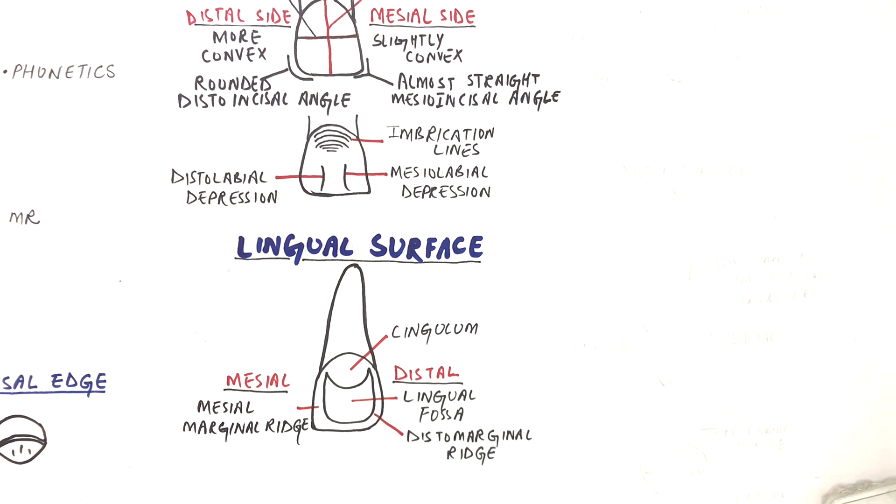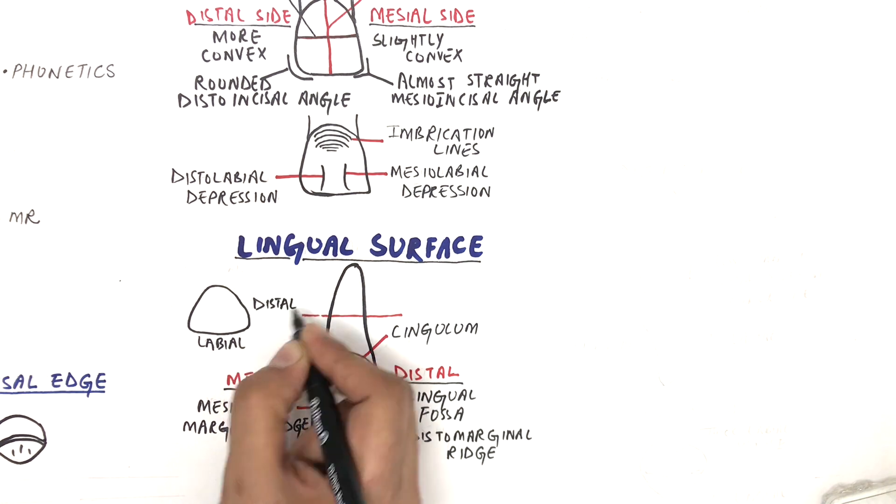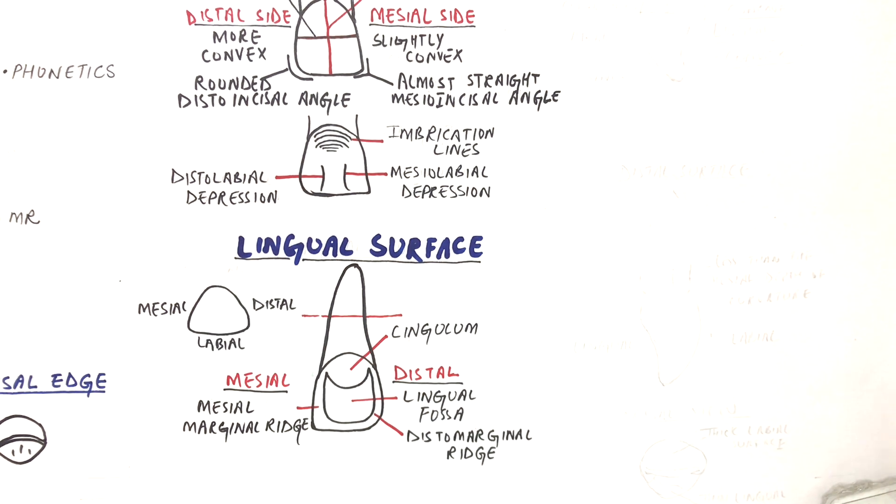If a cross section of the central incisor is taken at its root and observed, it looks much like a triangle with rounded angles. The sides of the triangle are formed by the labial, distal, and mesial surfaces of the root. The lingual surface of the root is formed by the union of the mesial and distal surfaces. What we can observe here is that the root narrows or converges at the lingual aspect of a central incisor.